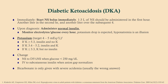Immediately, start a normal saline bolus — we're vigorously replacing fluids. Once you've diagnosed the patient, check their potassium, then administer insulin. Make sure you are checking their electrolytes and glucose every hour. If you're taking CCS, every hour you're going to be ordering those electrolytes.